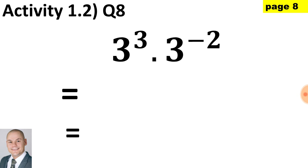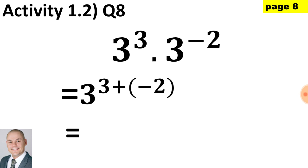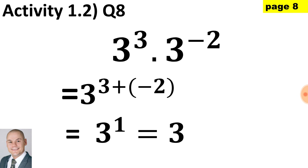In question 8, when multiplying bases that are the same we would add the exponents. Be cautious of the negative sign, so ideally work with brackets. Therefore 3 to the 3 plus (−2) would give us 3 to the exponent of 1, which is equal to 3.